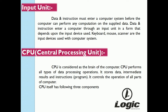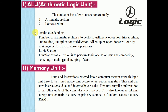The CPU controls the operation of all parts of the computer and has three components. First is the ALU, or arithmetic logic unit, which consists of two sub-sections. The arithmetic section performs operations like addition, subtraction, multiplication, and division — all complex operations are done by making repetitive use of these. The logic section performs operations such as comparing, selecting, matching, and merging of data.